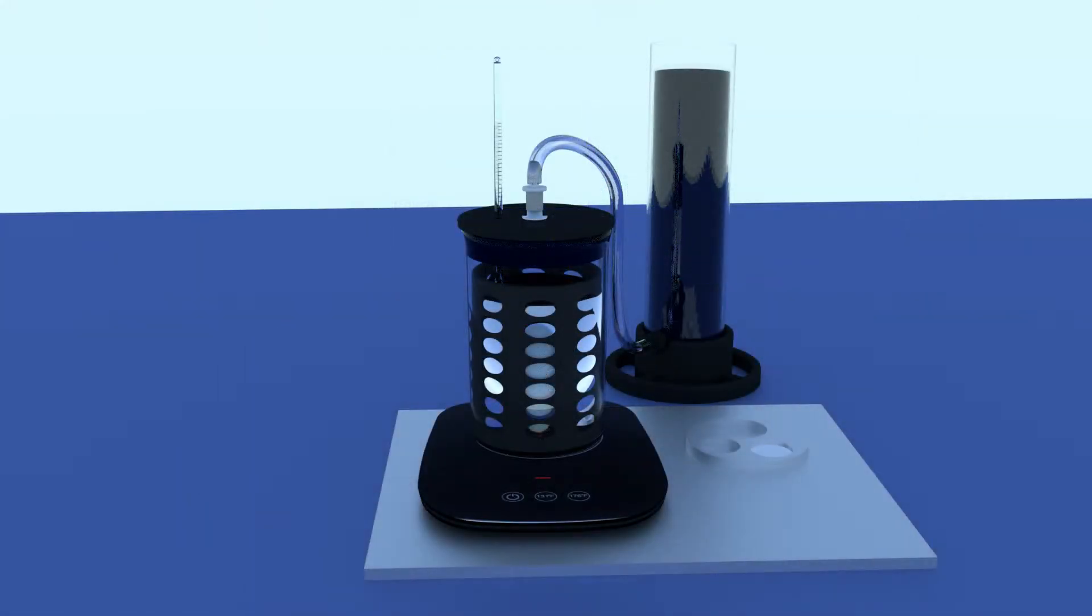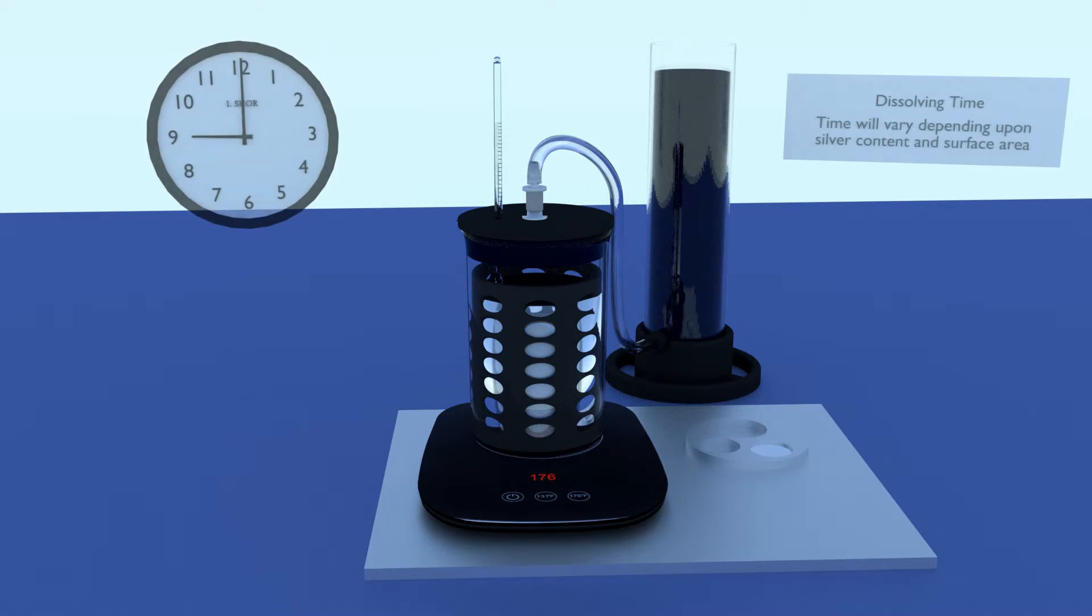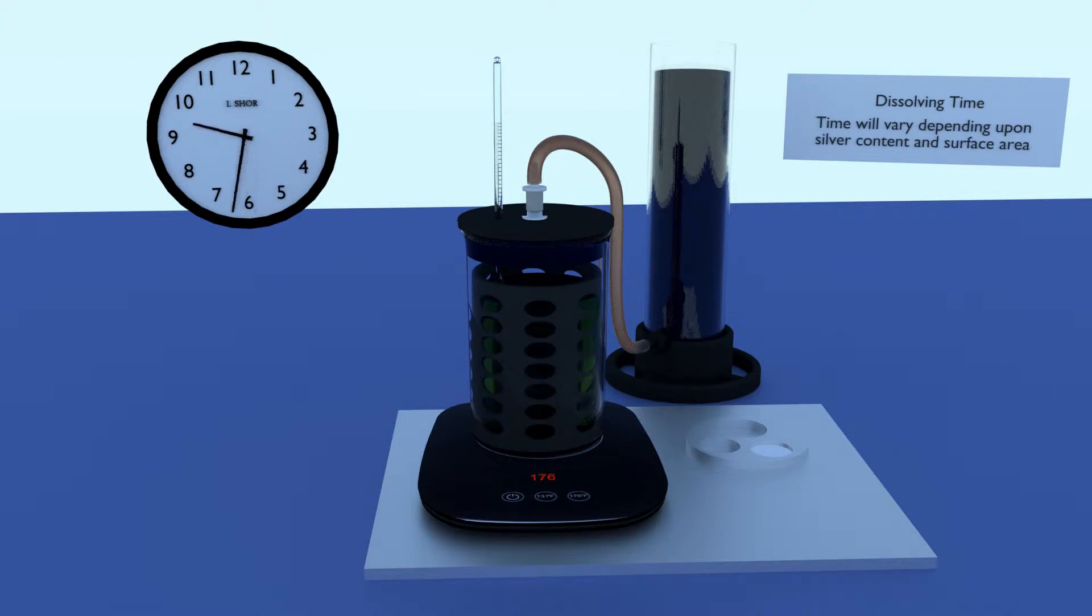Plug the hot plate into a convenient outlet. Press the on button to turn the unit on, then press the 176 button to set the temperature. The time required to dissolve your metal will vary depending largely upon the surface area of your metal and the silver content. Typical dissolving time is around one half hour to one hour. However, the time can increase significantly when refining items that are thick and have a high silver content.